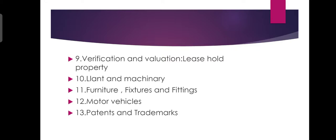If the plant and machinery has been purchased during the year, the original invoices, correspondence, vendors, and agreements will be verified. The auditor must ascertain that expenditure on repairs and revenues is not capitalized but charged to the profit and loss account. Plant and machinery details will be verified. The next topic is Furniture, Fixtures and Fittings.